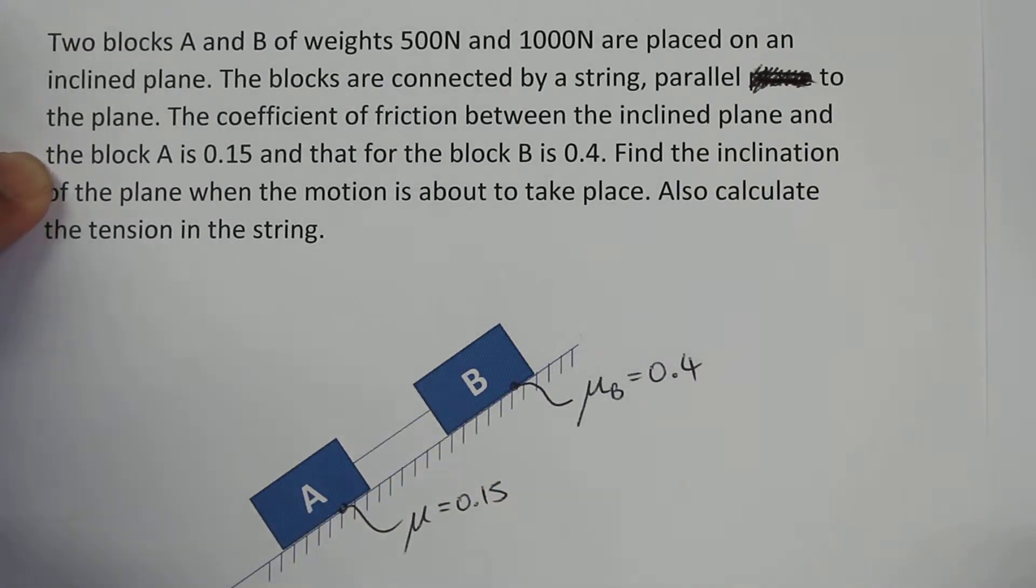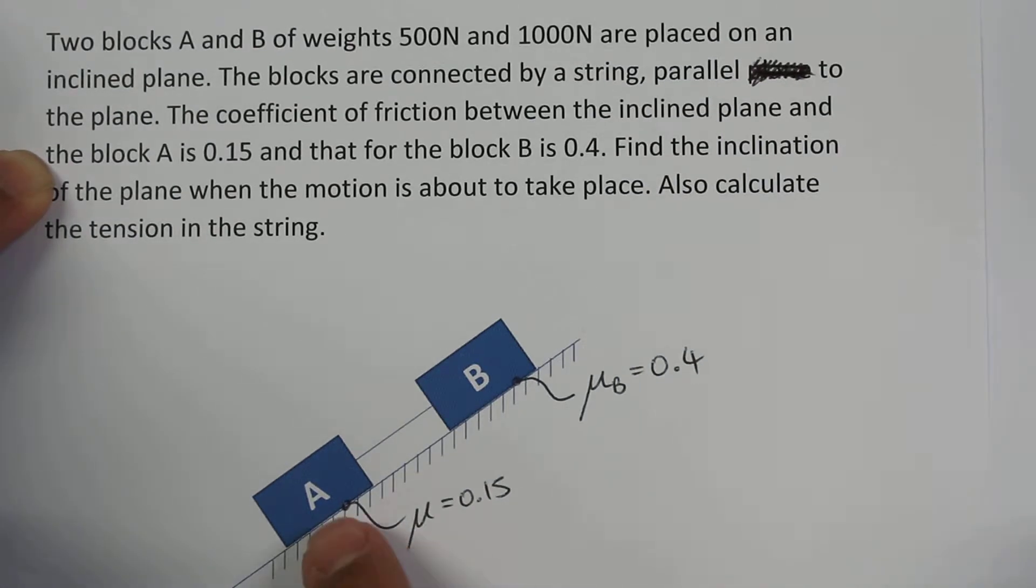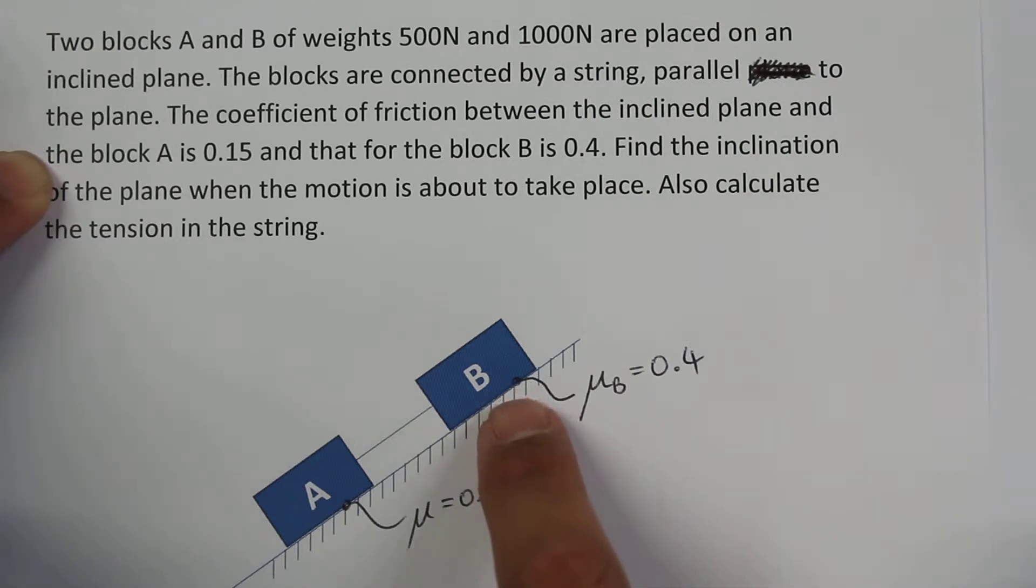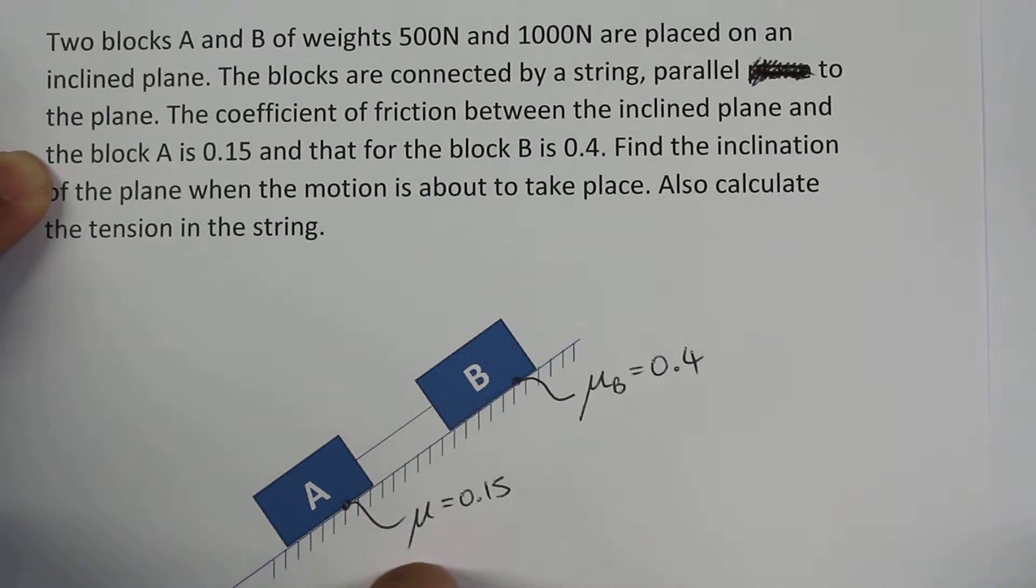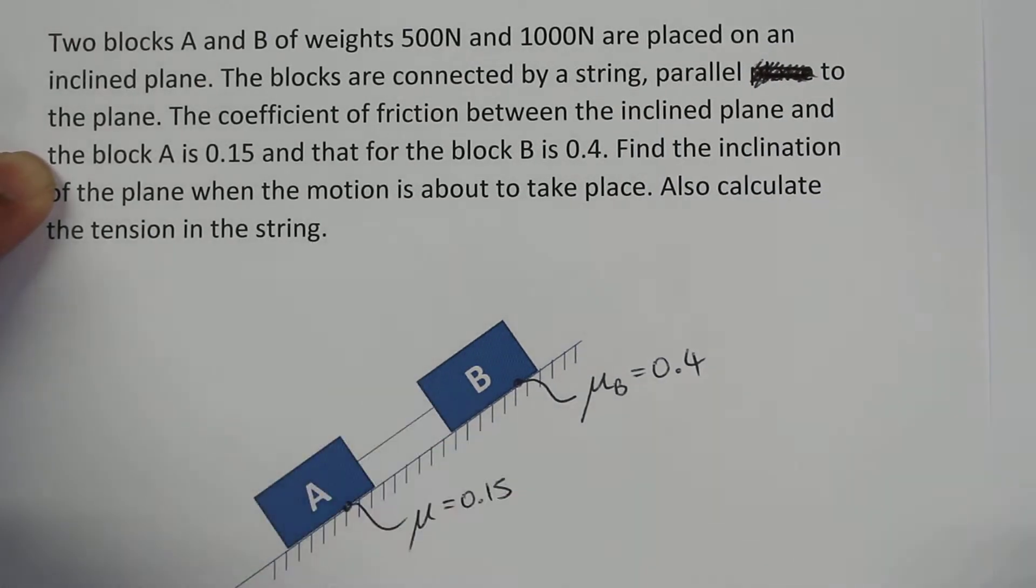The coefficient of friction between the inclined plane and block A is 0.15, and that for block B is 0.4. We want to find the angle of inclination of this slope when the block is about to start moving down the incline. We're also asked to calculate the tension in the string.